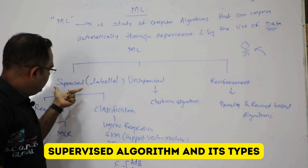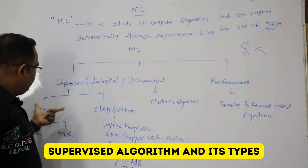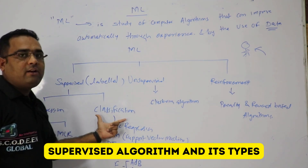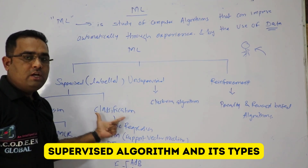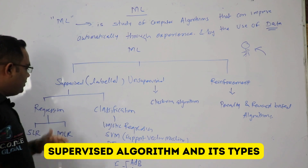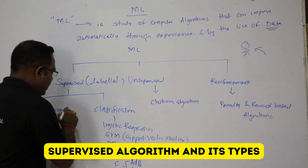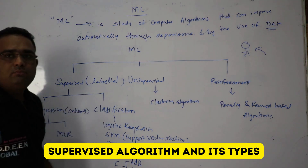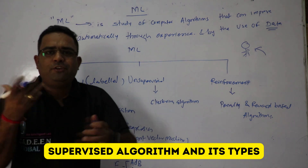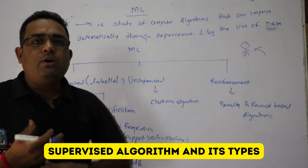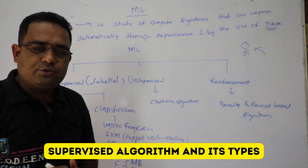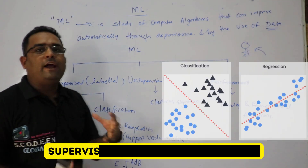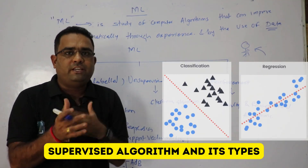Supervised algorithm is divided into two types: regression and classification. In regression, the target feature is in continuous form. In classification, we have categorical form. We'll see what type of data is continuous and what is discrete.